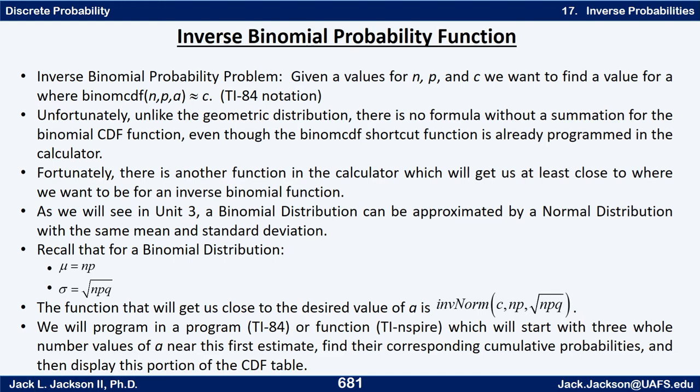For a binomial distribution, the mean is N times P, and the standard deviation is the square root of N times P times Q. So the function that will get us close is an inverse normal.